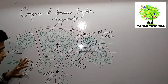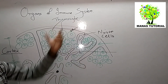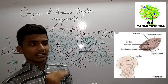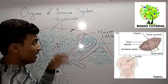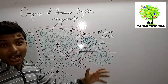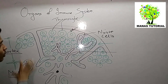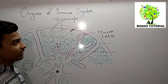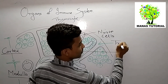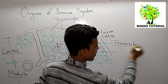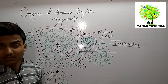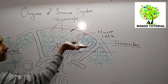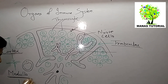This is the structure of the thymus. The thymus is a flat bilobed organ situated just above the heart. The thymus is surrounded by a capsule, and this capsule is divided into lobules. These lobules are separated by a connective tissue known as trabecula. Each lobule is further divided into two regions: the outer region known as the cortex and the inner region known as the medulla.